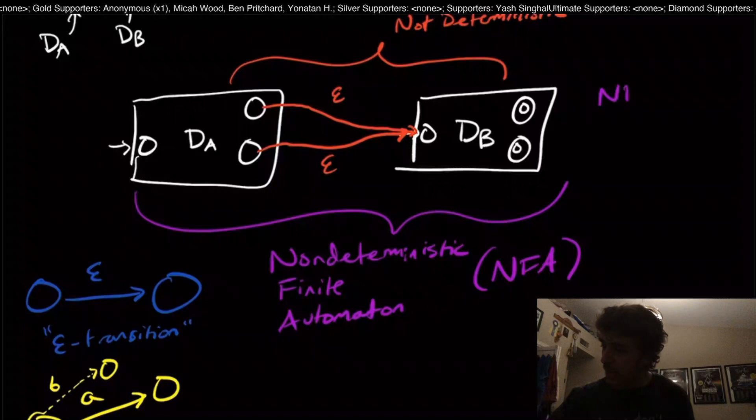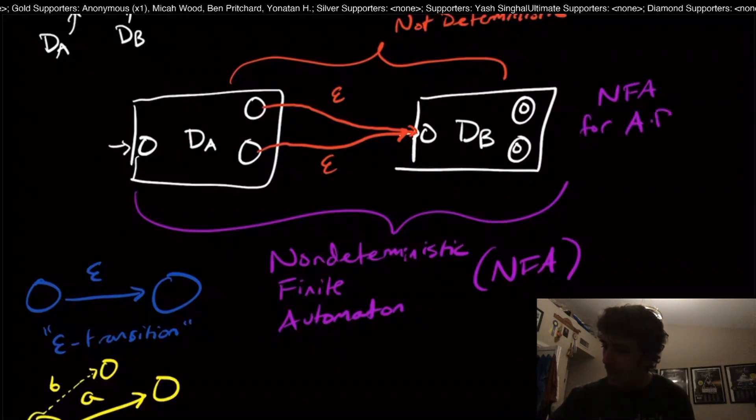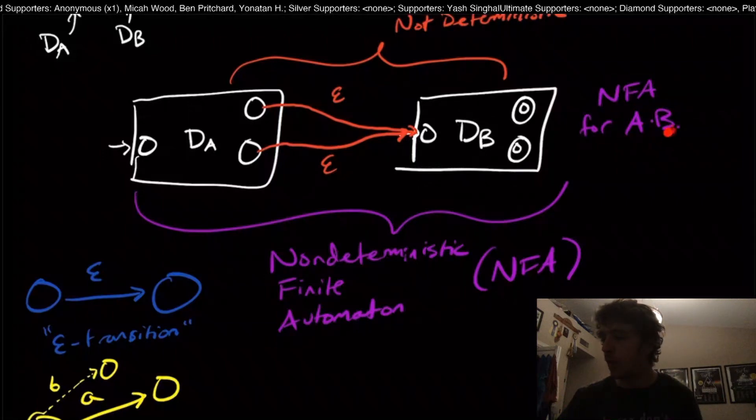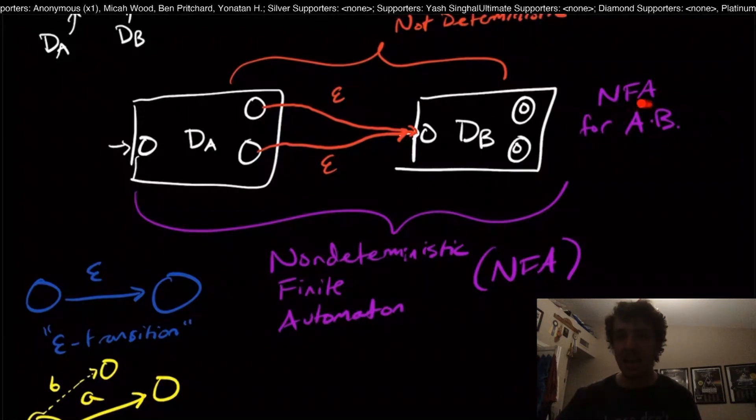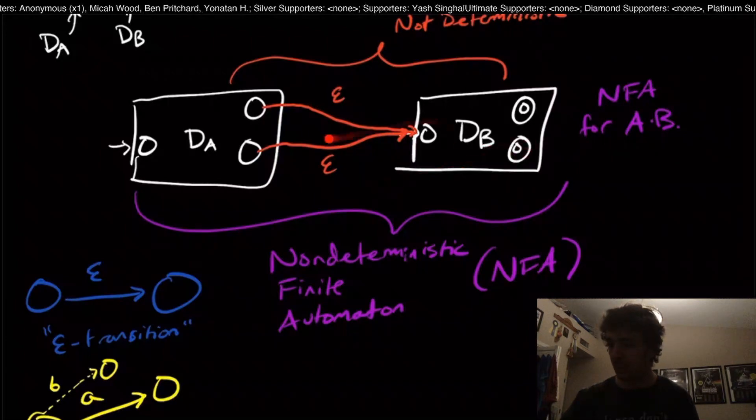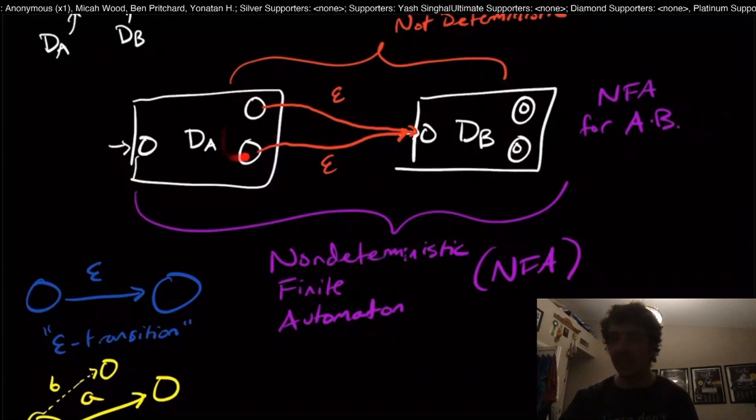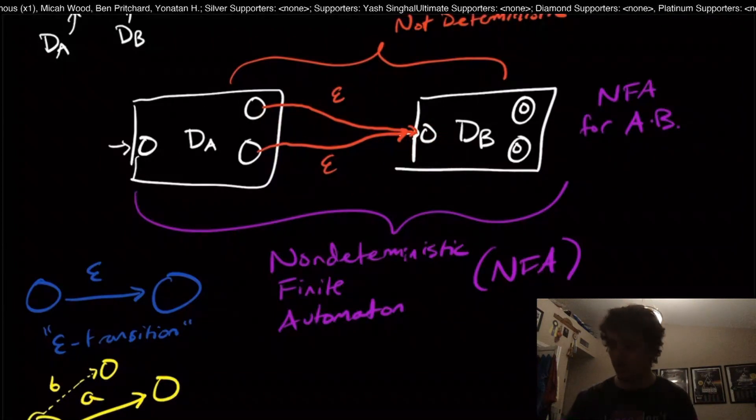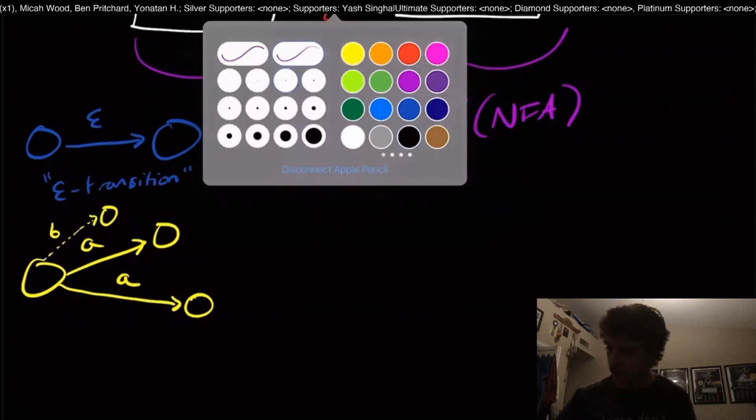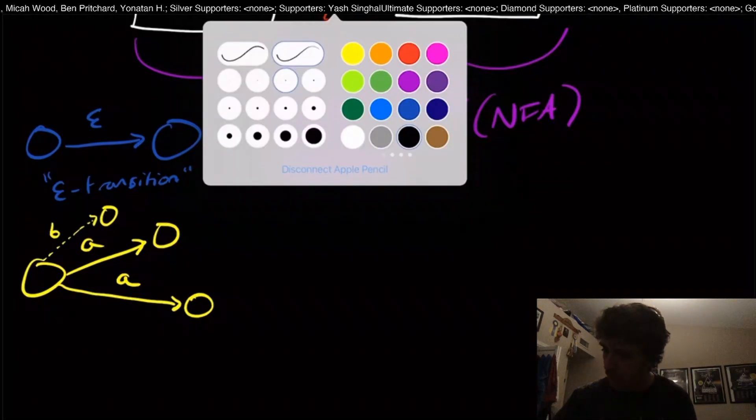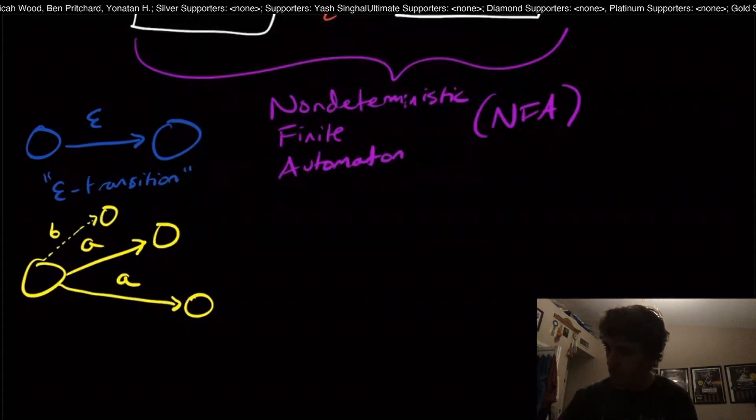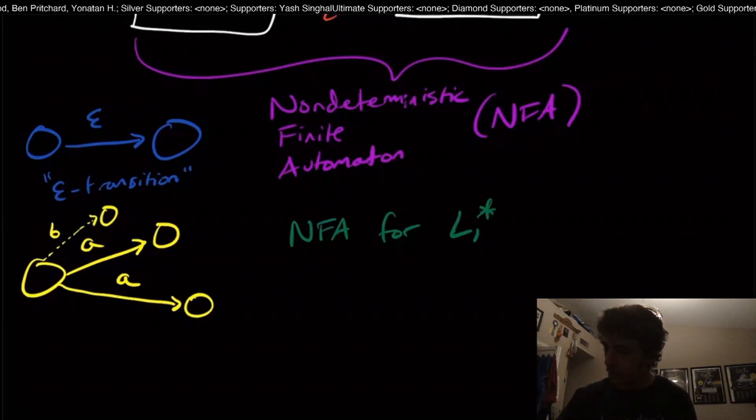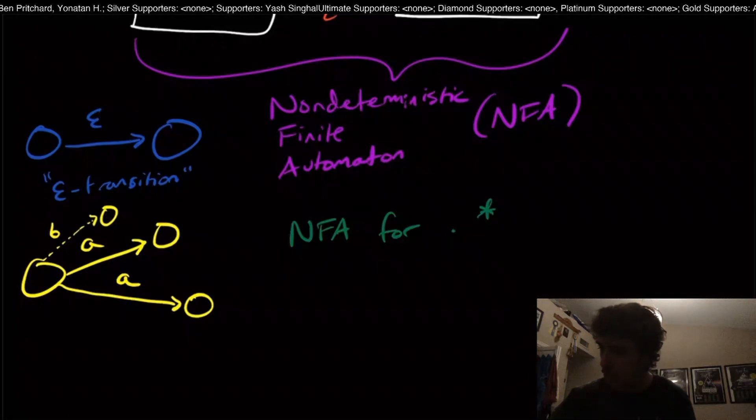So we can get concatenation really easily. This is an NFA right here for A concatenated with B. That means that if we have two regular languages A and B, I can make an NFA for them just by doing this, by making these states not final and epsilon transition over to here. How do we do star then?